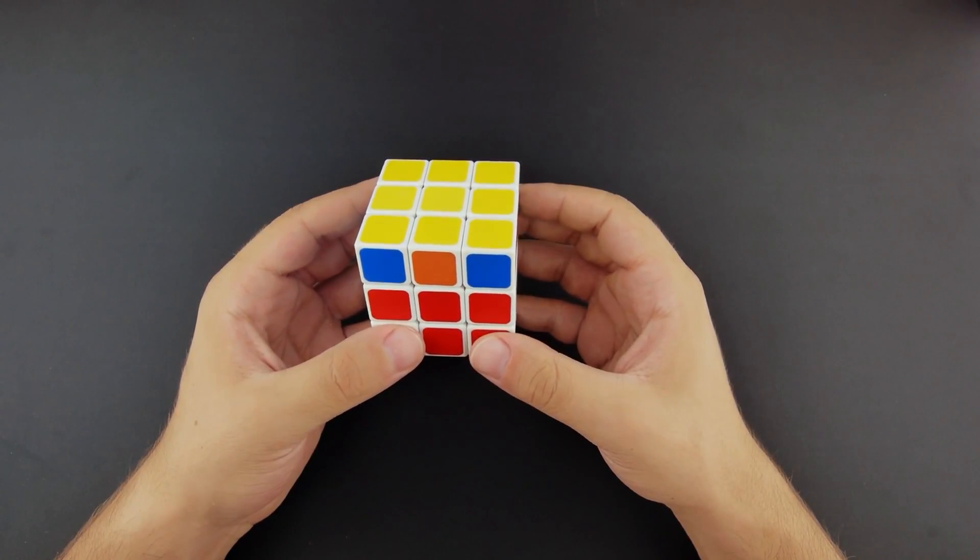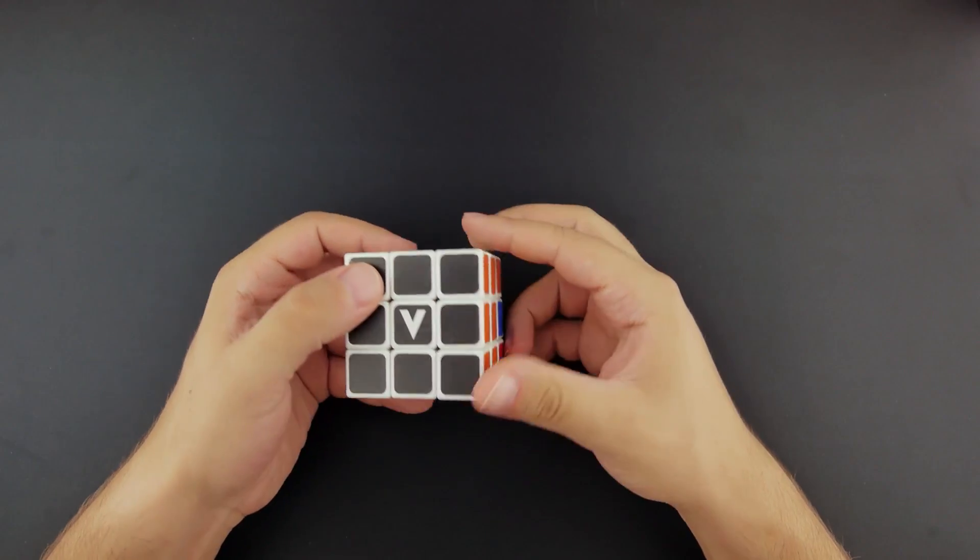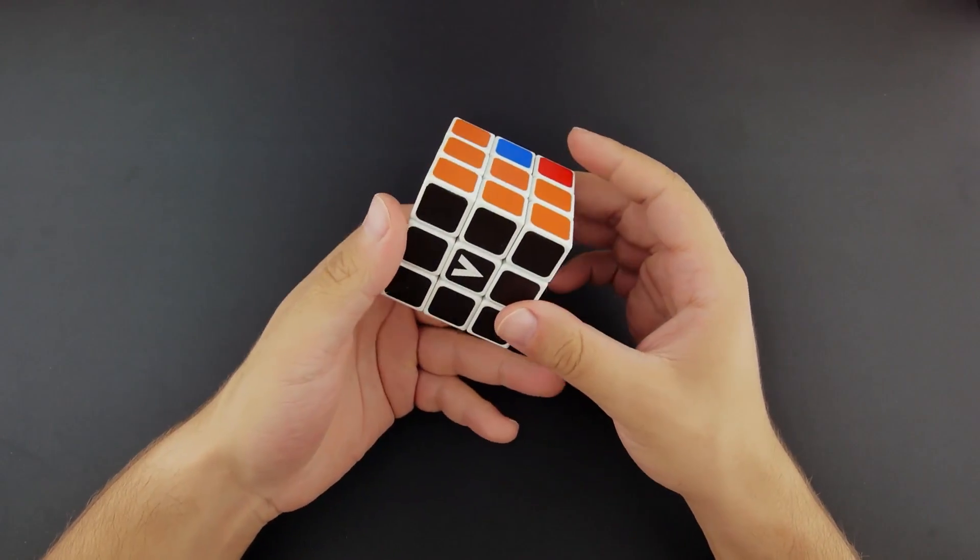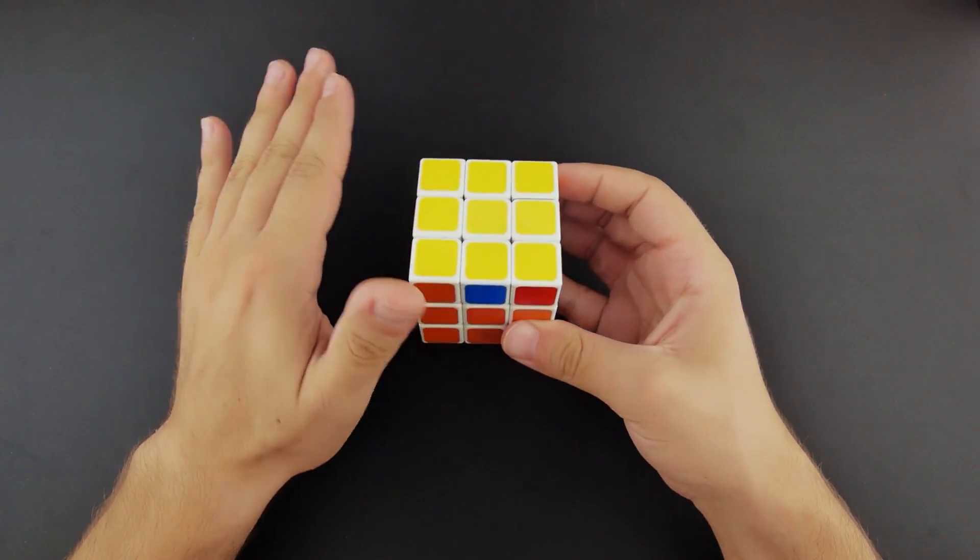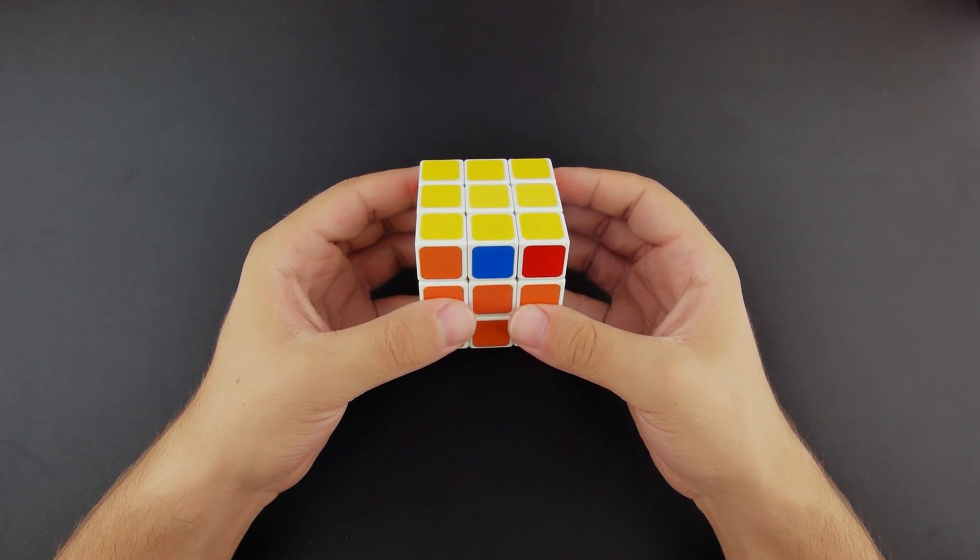Before we begin, you have to make sure that you have accurately solved two whole layers of the cube and the yellow side. If not, please watch our previous videos to solve them.